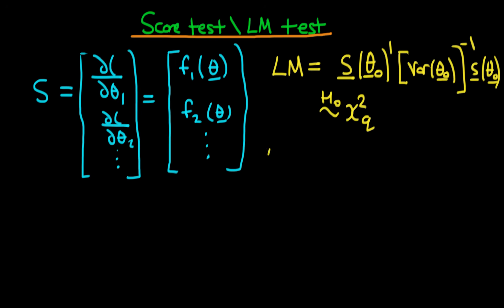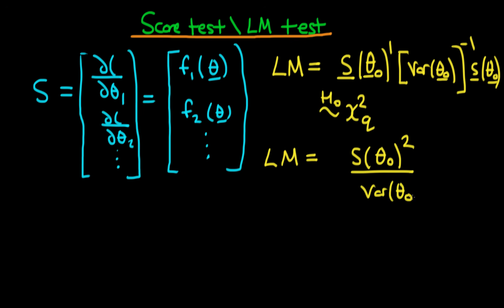In the univariate case, these score vectors and the variance term are all scalar. The order of multiplication doesn't matter, and we get a numerator which is the score evaluated at θ₀, all squared, and the denominator is just the variance of our parameter estimates at θ₀.